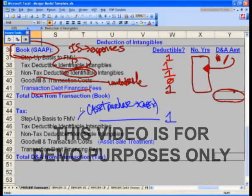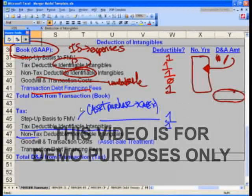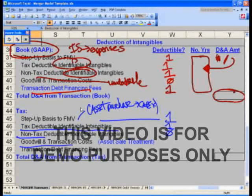By definition, tax deductible identifiable intangibles are also deductible, and by definition these are not. And again, I'll give you examples, goodwill and transaction costs are not tax deductible and never will.